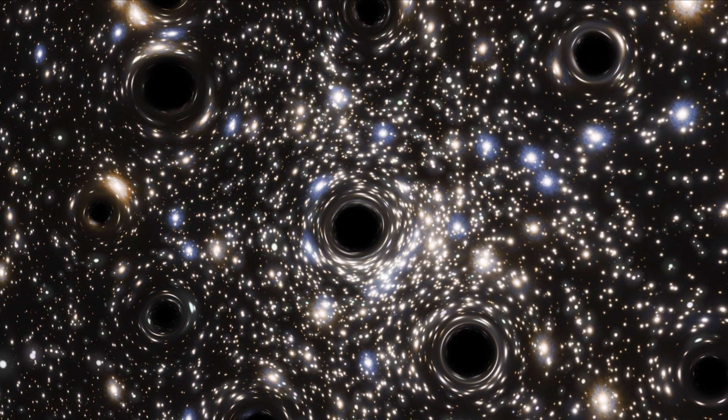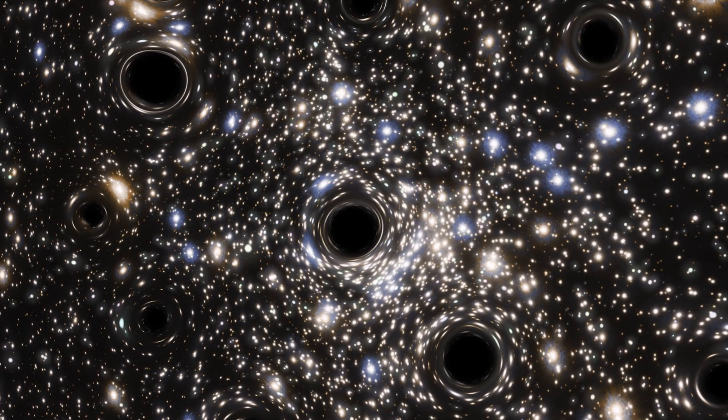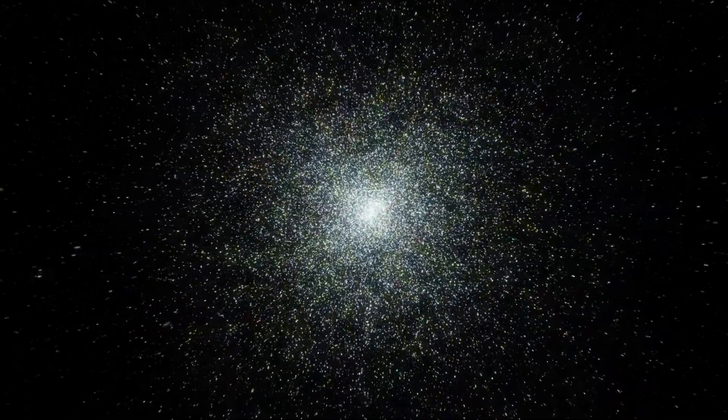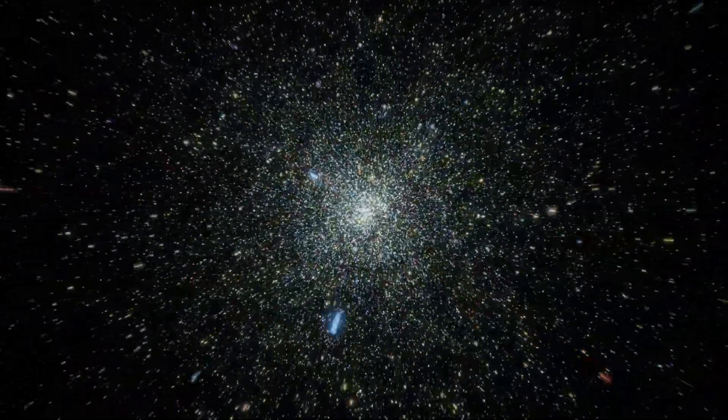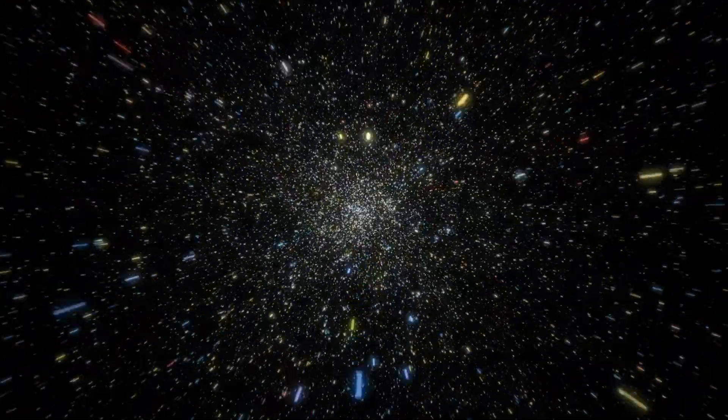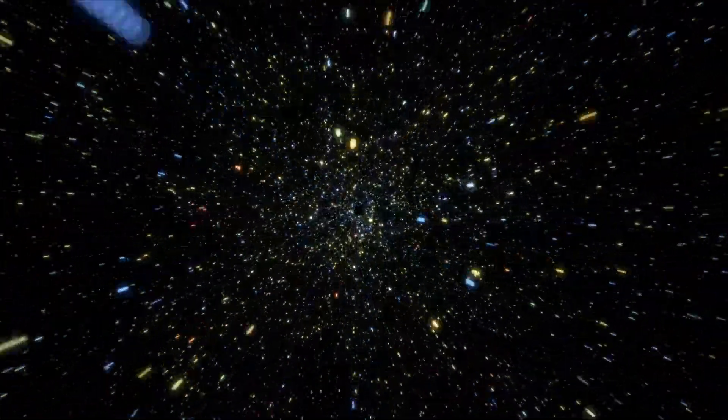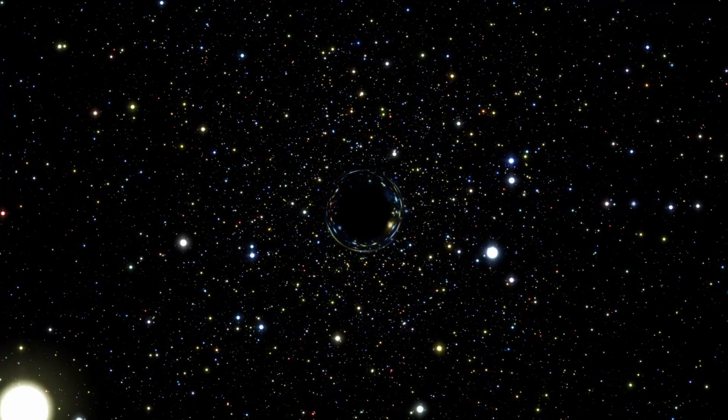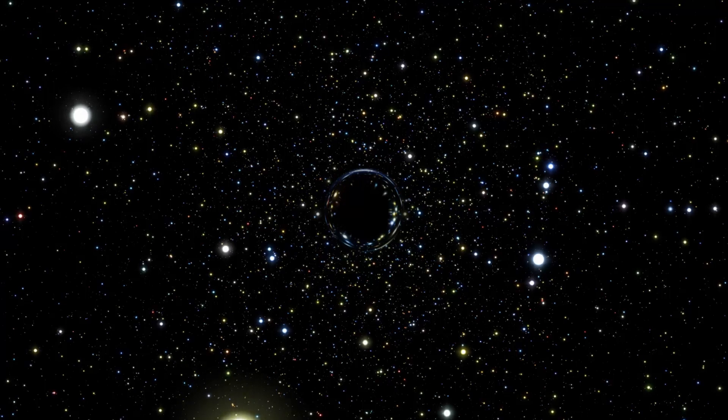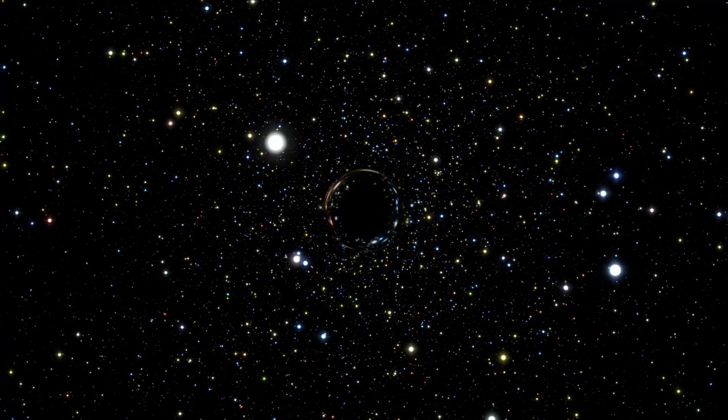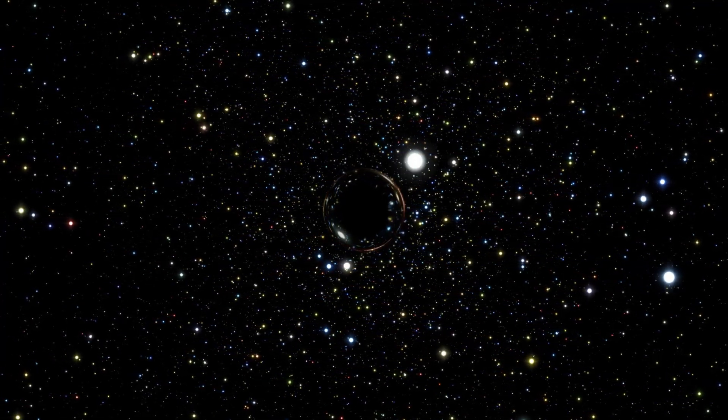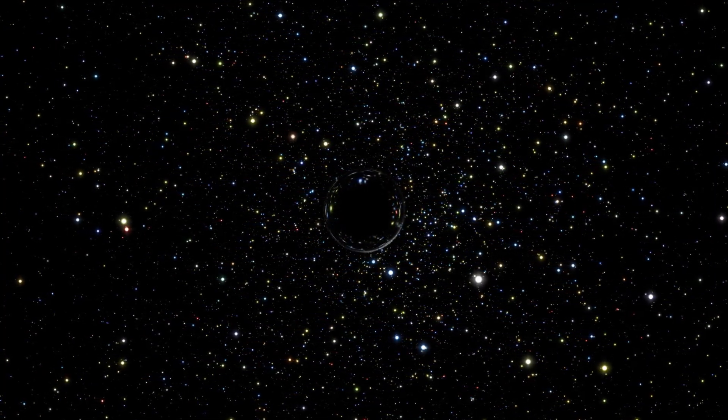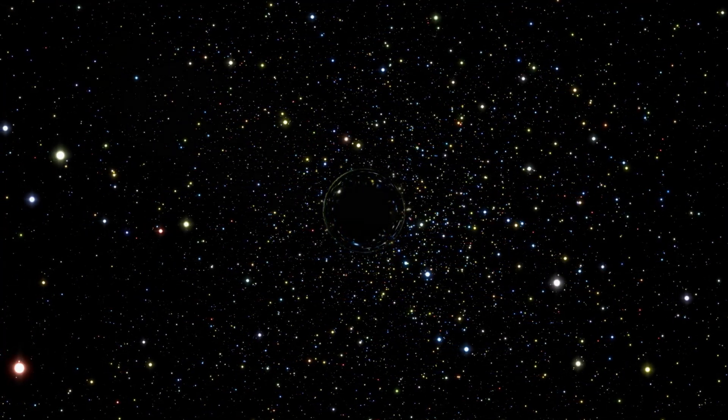But primordial black holes wouldn't have started out as a star anyway. They would have popped into existence when the newly created universe was not yet homogeneous and evenly distributed. At this point, some scientists think that certain parts of the universe were unbelievably rich in energy. It's these tiny, insanely energetic points in space that could have theoretically collapsed directly into primordial black holes. And depending on just how soon after the Big Bang these first black holes formed, they could range from about the mass of a paperclip to about 100,000 times the mass of the Sun.